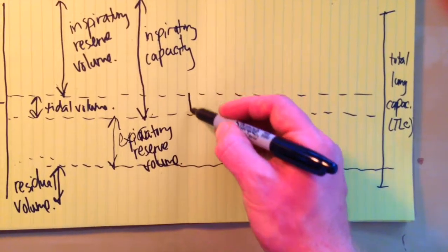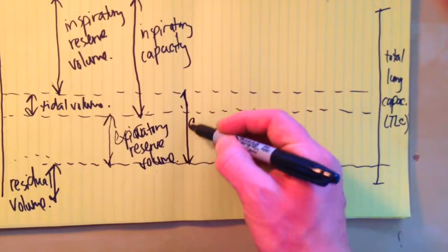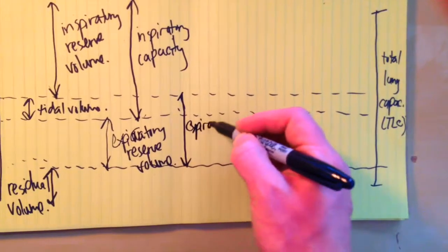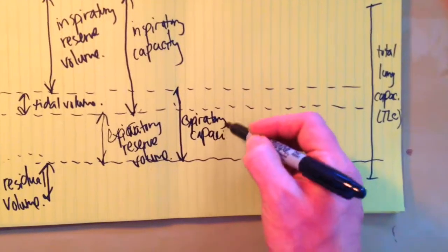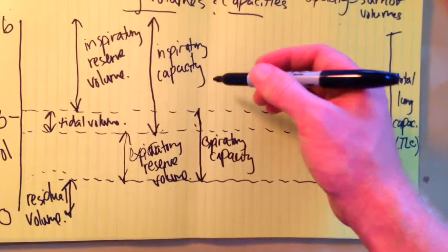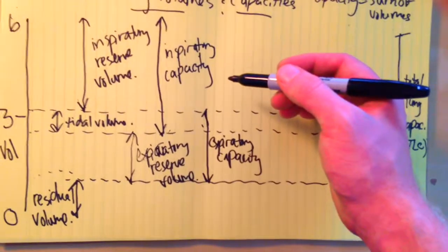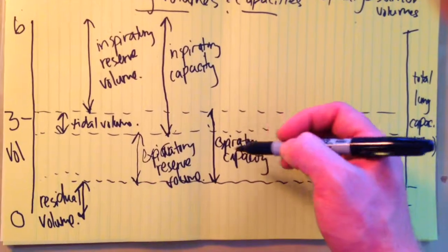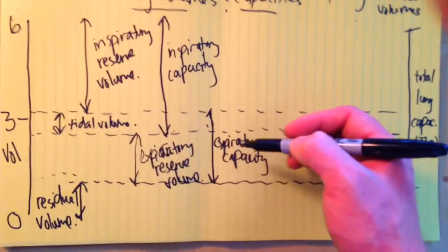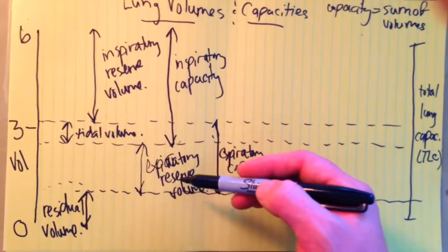And thus our expiratory capacity is essentially from the end of that tidal volume inspiration. So when you breathe in a normal breath, and then if you were to blow all the way down as much as you possibly could, you'd get to your residual volume. That volume is your expiratory capacity. That's made up of the tidal volume plus your expiratory reserve volume.